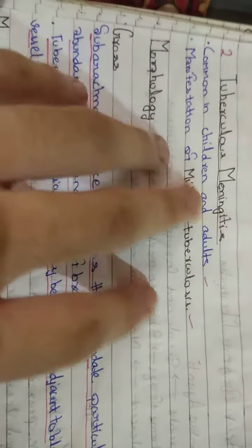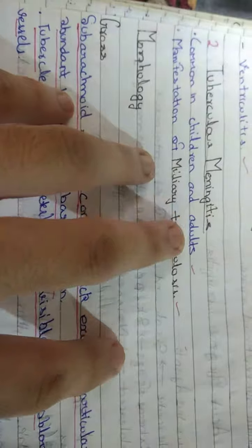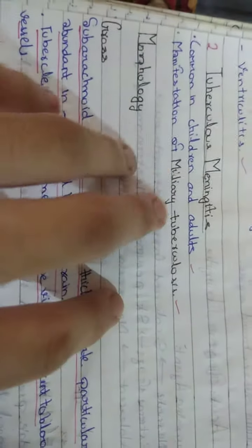Second is tuberculous meningitis. It is common in children and adults and is a manifestation of miliary tuberculosis.